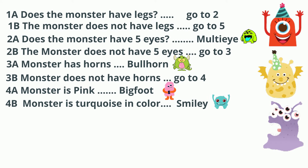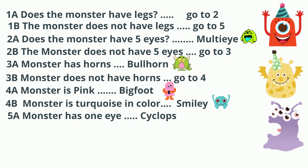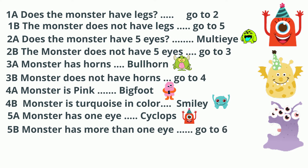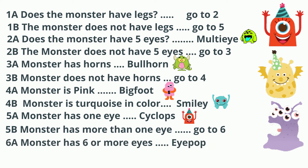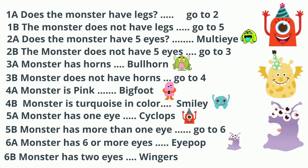So now we move to question 5, the monsters without legs. 5A: monster has 1 eye, that will be Cyclops. 5B: monster does not have 1 eye, go to 6. Again, the last question will not be a yes/no question but will be based on characteristics. 6A: monster has more than 6 eyes and is Eye Pop. 6B: monster has 2 eyes and is Wingers.